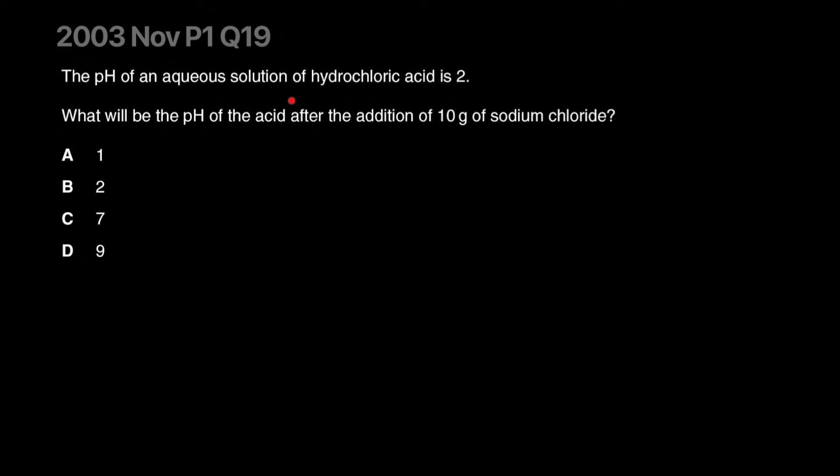The pH of an aqueous solution of hydrochloric acid is 2. What will be the pH of the acid after addition of 10 grams of sodium chloride? Sodium chloride is actually neutral and will not affect anything. It won't hurt the acid. It won't change the concentration of the acid because it's not water. So this would do absolutely nothing. The answer is it will remain the same. B.